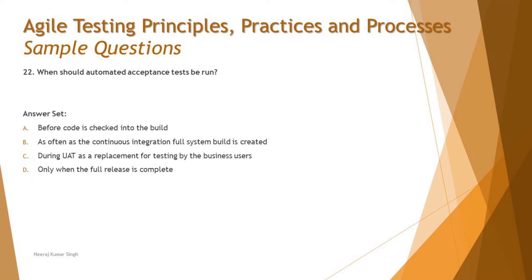Option B says 'as often as the continuous integration full system build is created.' Full system build means at any point where you have a full system established that is evaluatable — meaning you can go and measure the functionalities by using them. This looks meaningful. Option C says 'during UAT as a replacement for testing by the business users' — as per the syllabus, that is too late.